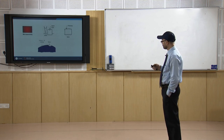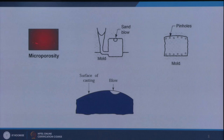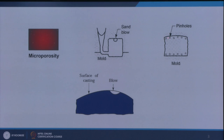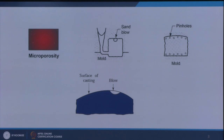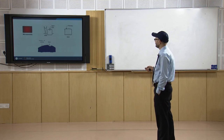Looking at the defects: these are the cases of micro porosities — the white structures you see here. You can see the pin holes where the gases tried to come out. These are the blow holes or open blows if they are on the surface, showing blow holes and open blows.